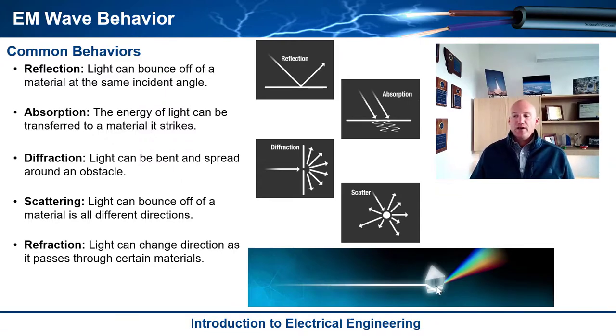And so this prism right here will actually take the individual colors and it will bend them at a different angle depending on their wavelength. So the output of a prism basically looks like a rainbow. And it's really cool because this was one of the first ways that they discovered that white light consisted of all the colors in the visible spectrum.